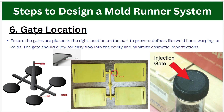The next very important point is selecting the proper gate location. After completing the runner topic we will move to gates — understanding gate types, how to design gates, and choosing gate locations, which will be covered in a separate video. Gate location is critical: choosing the wrong location can cause defects like weld lines, warping, and voids. We need to choose the proper gate location to ensure easy flow into the cavity, complete cavity fill, and minimal cosmetic impression.